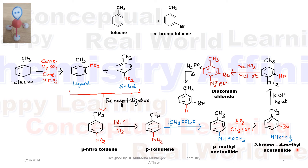The next step is deprotection of the anilide group. For that we use potassium hydroxide followed by strong heating. The NHCOCH₃ group is converted back to NH₂.